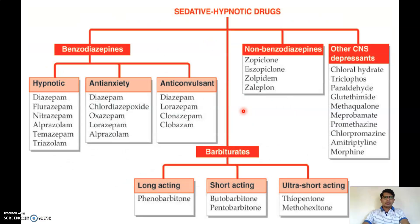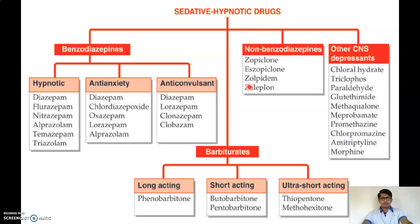Coming to the classification of Hypnotics and Sedatives, they are mainly classified into four groups: benzodiazepines, barbiturates, non-benzodiazepines, and other CNS depressants.